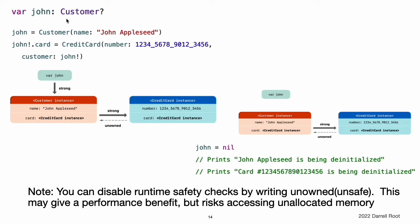The next code snippet defines an optional Customer variable called John, which will be used to store a reference to a specific customer. You can now create a Customer instance and use it to initialize and assign a new CreditCard instance as that customer's card property. The Customer instance now has a strong reference to the CreditCard instance, and the CreditCard instance has an unowned reference to the Customer instance. Because of the unowned customer reference, when you break the strong reference held by the John variable, there are no more strong references to the Customer instance. Because there are no more strong references to the Customer instance, it is deallocated, and after this happens, there are no more strong references to the CreditCard instance, and it too is deallocated.